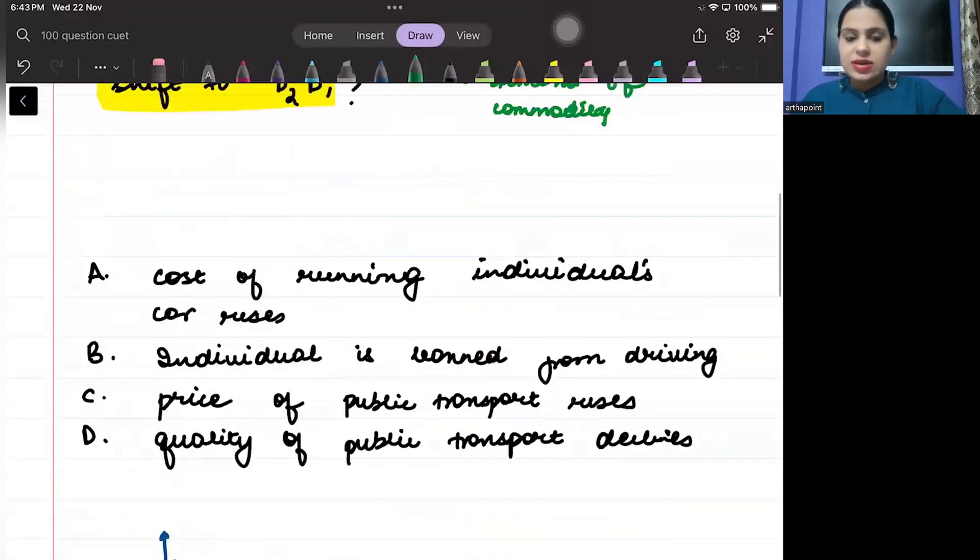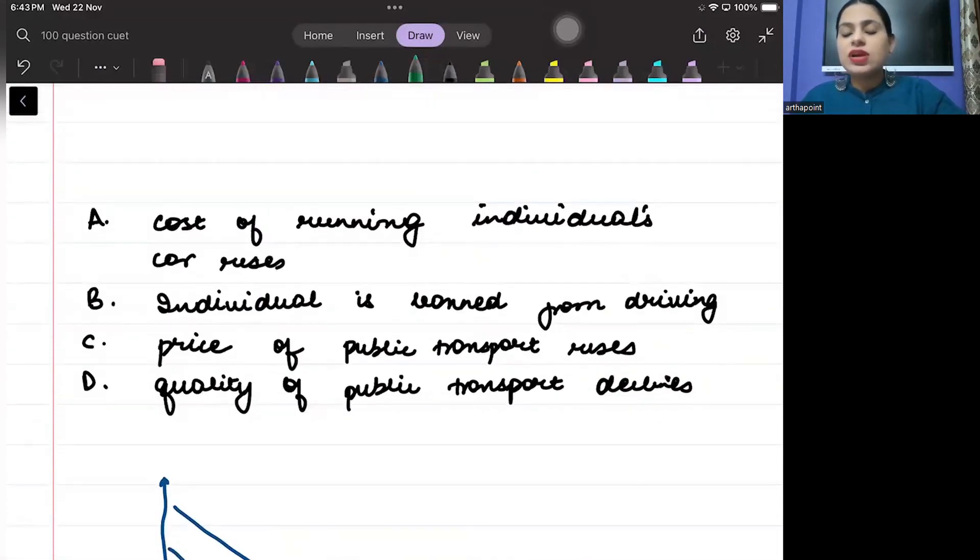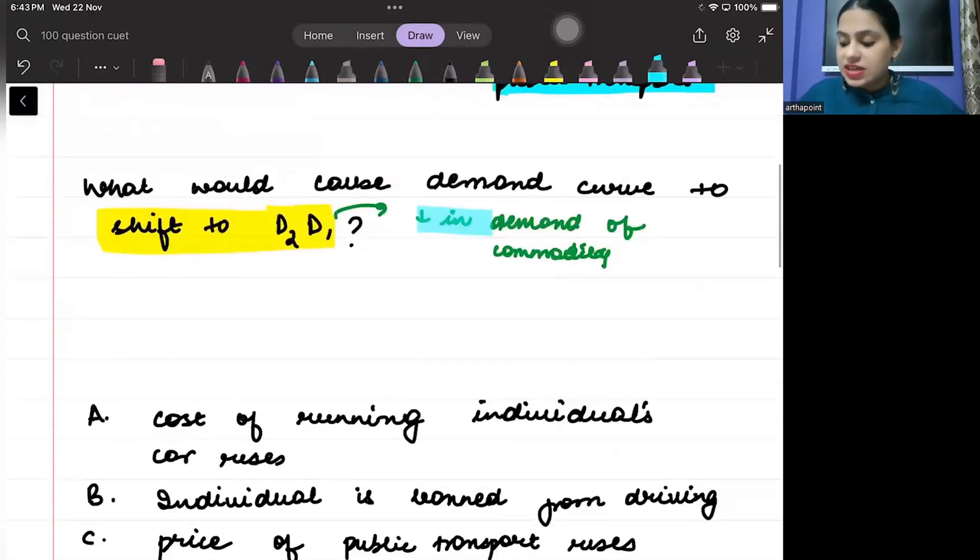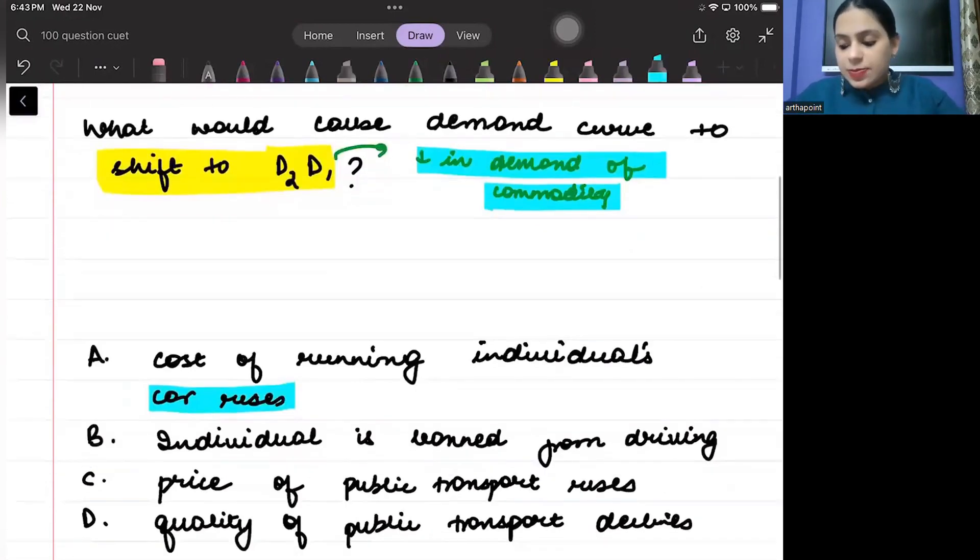Now, let's put the examples. Cost of running individual car rises. So, the demand of public transport has decreased that there is a decrease in demand of the commodity. But car is a substitute.